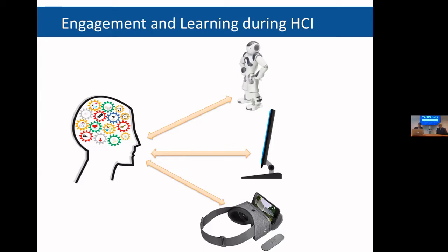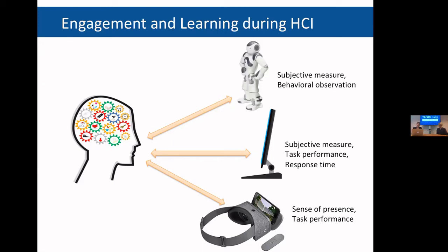Why do we need to look at brain activity to measure a user's learning process? What is currently happening with most educational technology is very similar to traditional education — there is the learning phase and then the evaluation phase. You interact with technology in the form of a robot, virtual reality environment, or a computer tutoring system, and then afterwards we ask subjects how they felt, what their subjective workload was, give them a task, and collect their performance or response time. So we have no information about the learning process and the dynamics of the learner's experience during that process.